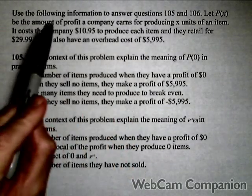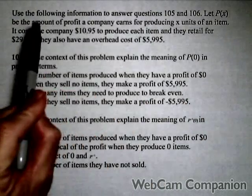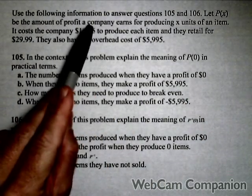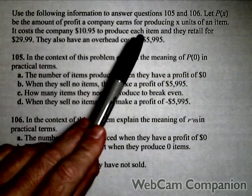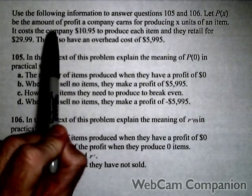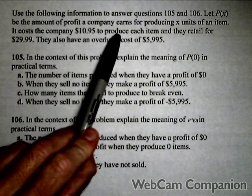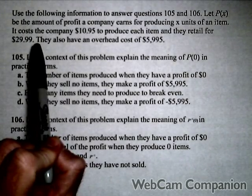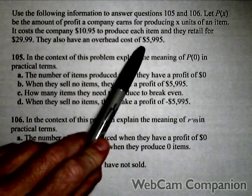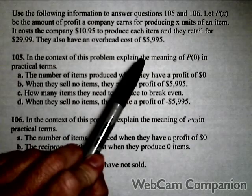The following two problems are based on the information we have here. Let P(x) be the amount of profit a company earns for producing x units of an item. It costs the company $10.95 to produce each item, and they retail for $29.99. They also have an overhead cost of $5,995.